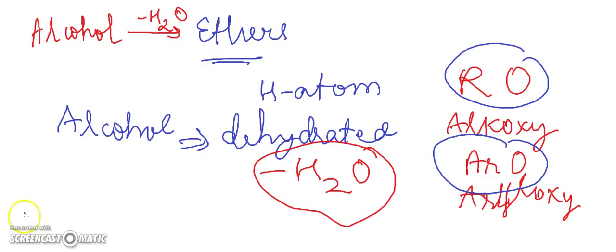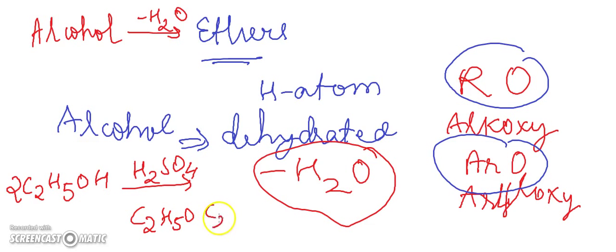For example, if you have C2H5OH, this is your ethanol, and you have two molecules of ethanol, and in the presence of H2SO4, what will happen? A molecule of water will be removed and you will get C2H5OC2H5.